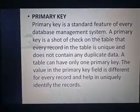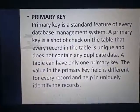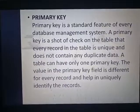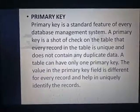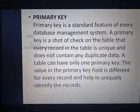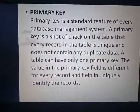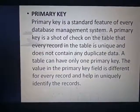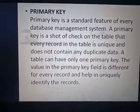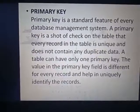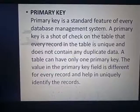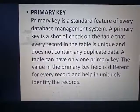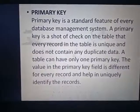A single table has only one primary key, which must be unique — like your roll number or serial number, which is always a unique number. The value in the primary key field is different for every record and helps uniquely identify the record. For example, roll numbers are unique; everyone has a different roll number or serial number like 1, 2, 3, 4.